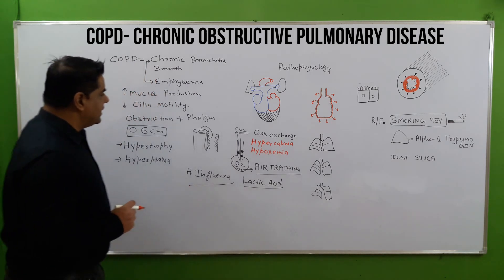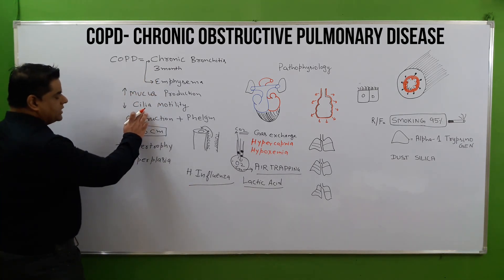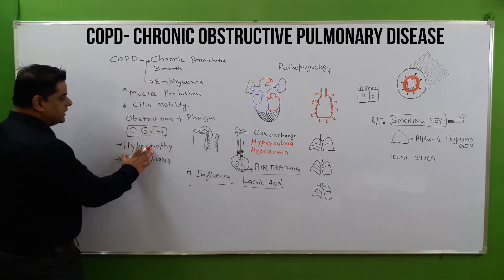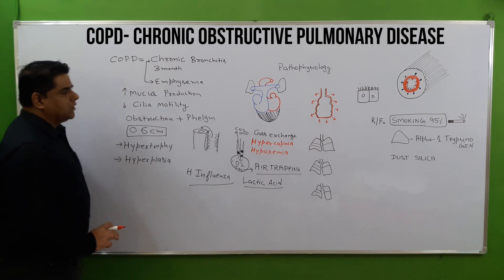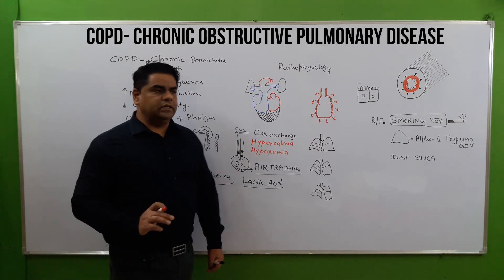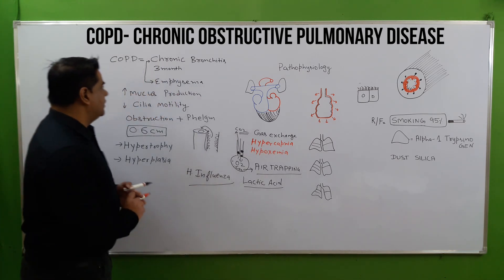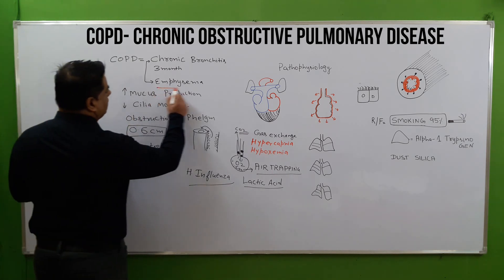So far we have discussed damage to our bronchi, its layers, cilia, and so on. Now our target moves to the next part — that is emphysema.